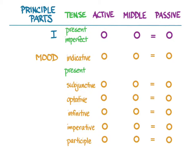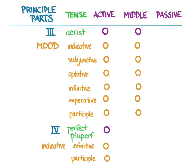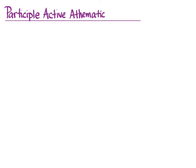So far, we've covered everything from the first principal part except for the participles, and that's what we'll do in this video. And from the third principal part, we've also covered all of the moods and voices except for the participle in the aorist, and now we will also do that for the aorist, and for histemi, we'll cover the perfect participle active. The present active participle for athematic verbs uses the first principal part plus the endings.